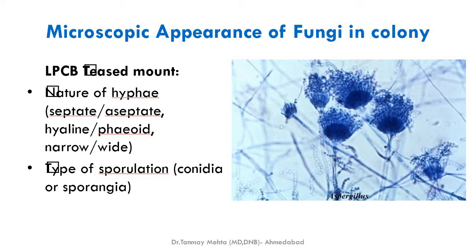For microscopic appearance, we use LPCB (lactophenol cotton blue) teased mount. We take a small piece of culture medium and gently tease it on a slide, then examine for the nature of hyphae — whether septate or aseptate, whether hyaline (colorless) or dematiaceous (pigmented/colored), whether narrow or wide — and identify the type of spores present.